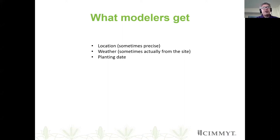In some cases we get station data from a local station, but especially with large datasets from many collaborators, we have to derive weather data from location coordinates. Often we only get planting date. We would ideally want things like the exact planting conditions, what happened to the soil before, management data, and even the harvesting date — but this is basically the reality and we have to work with it.